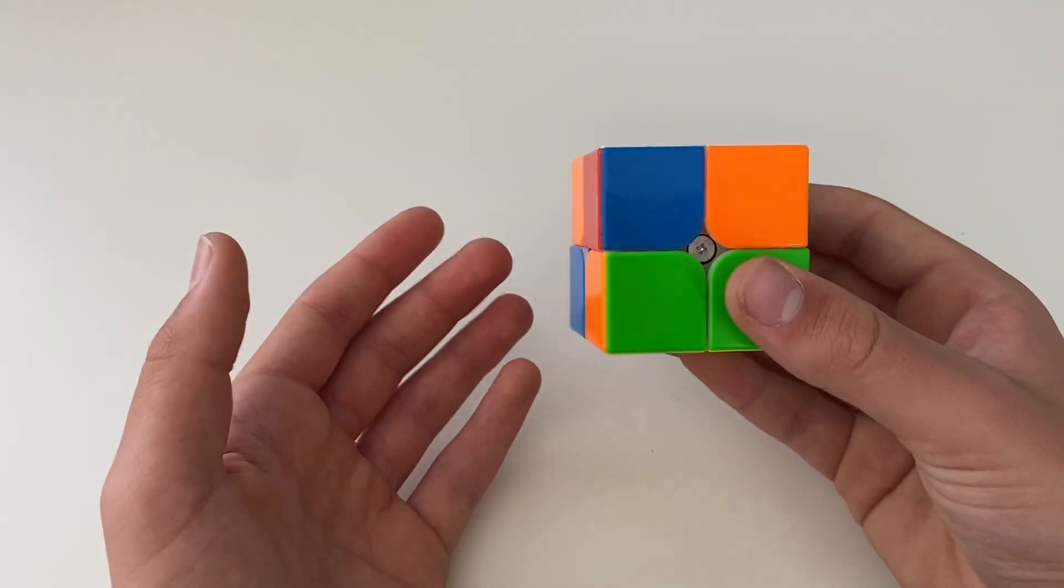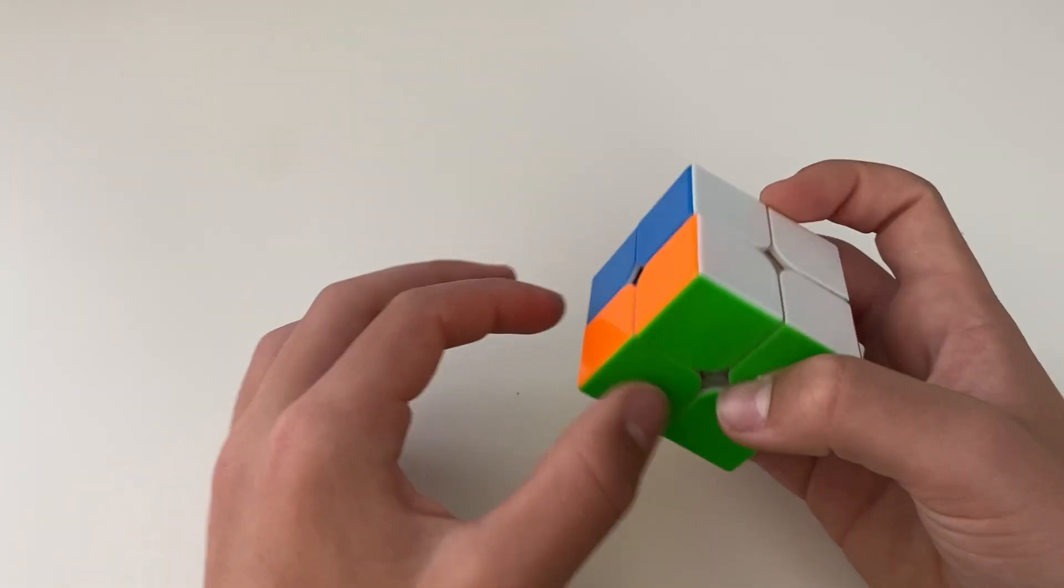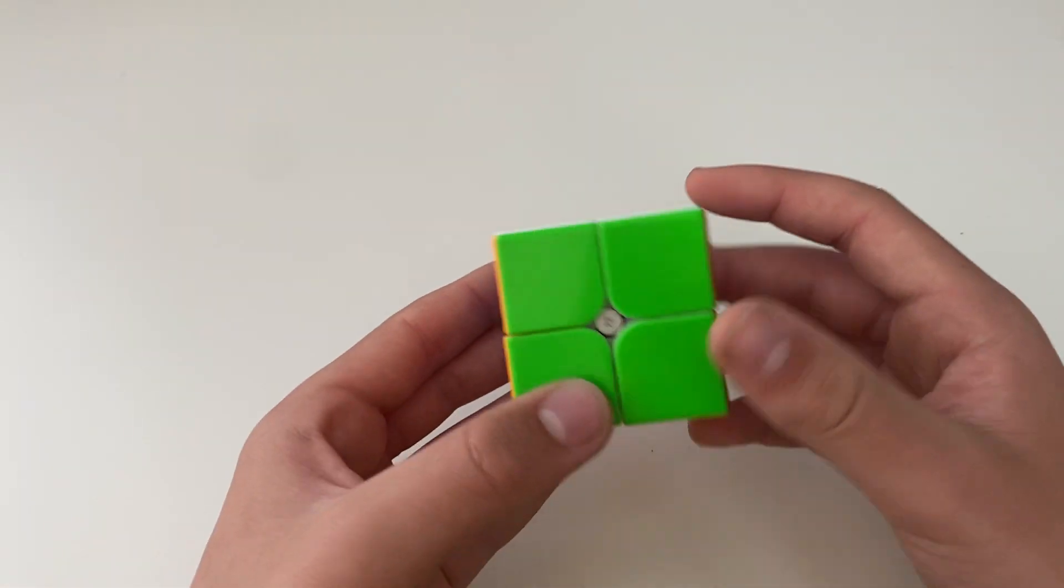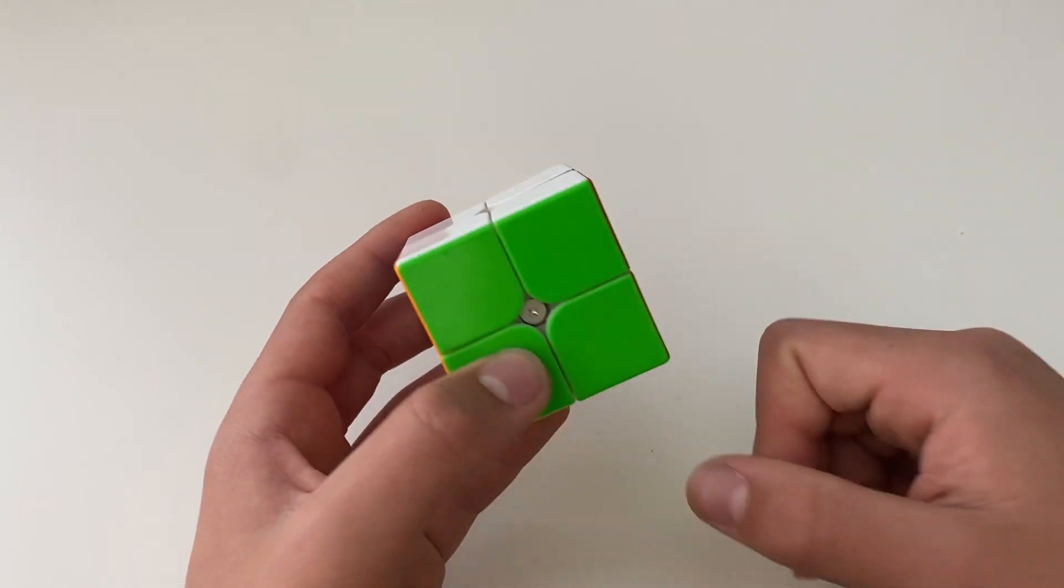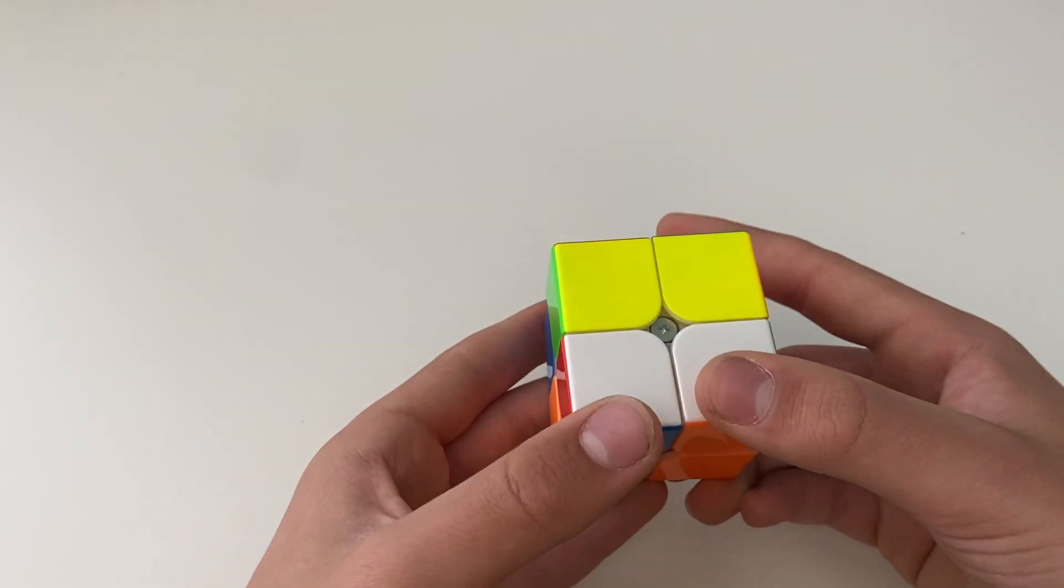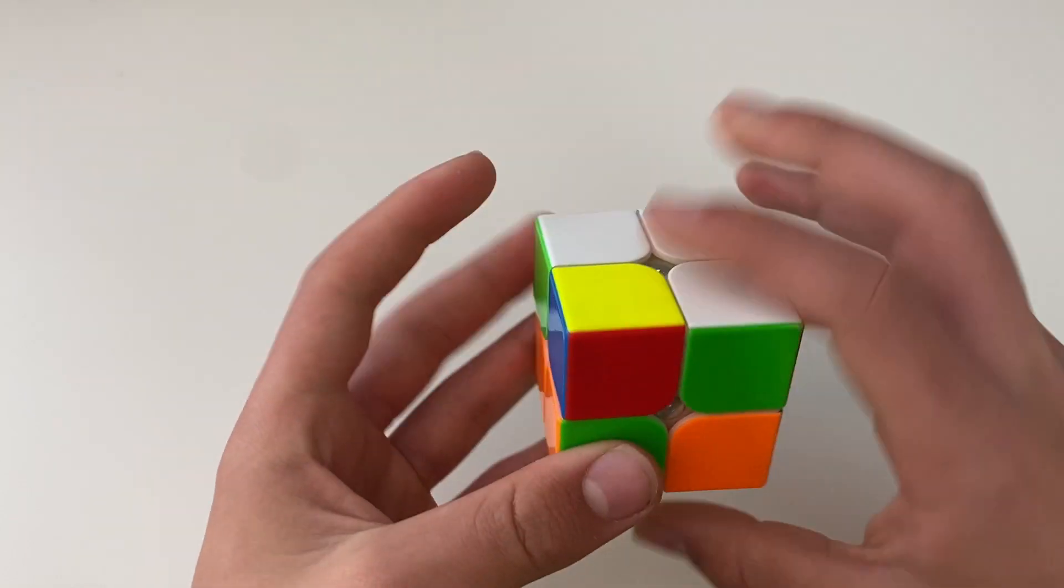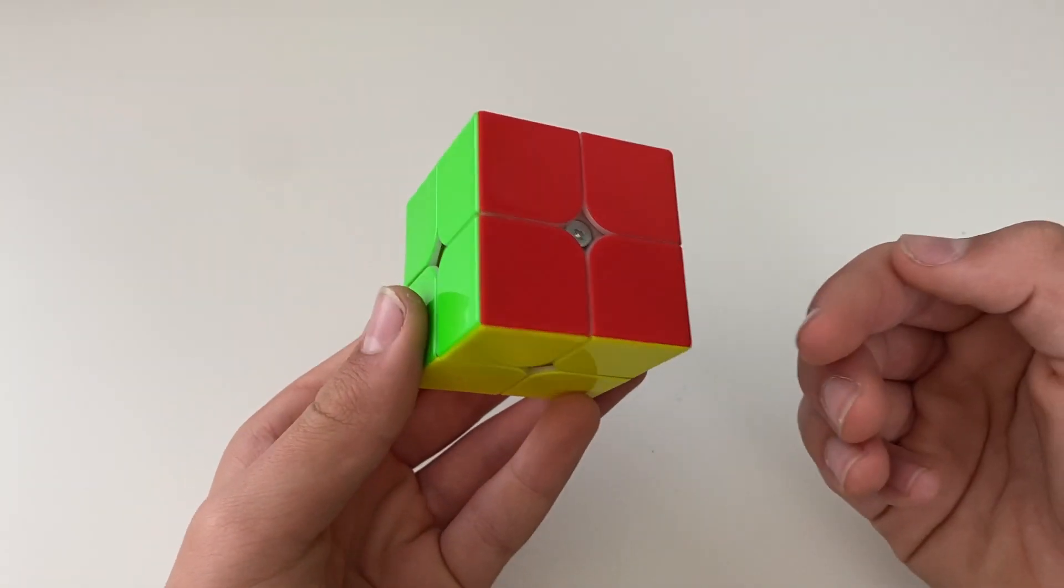So it doesn't matter whatever color it is, it just matters that there's one on top that's solved and one on bottom that's solved. So if you run into this case where there's one bar on top and one bar on bottom, it's going to be this algorithm: R2, U', B2, U2, R2, U', R2. And that is going to solve that case.